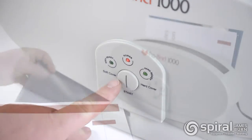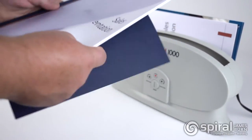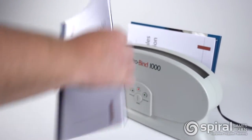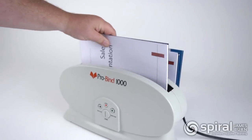To bind a document, simply put loose sheets into the spine of the binding covers, place them into the ProBind 1000 and push the button.